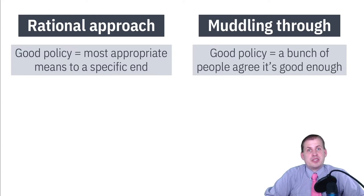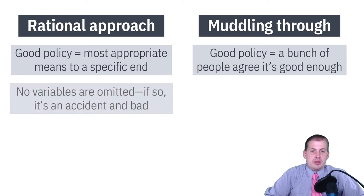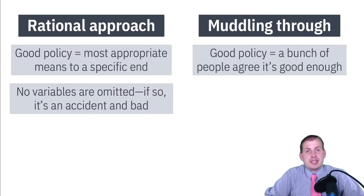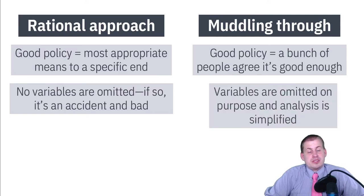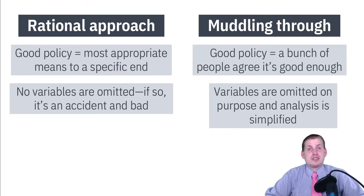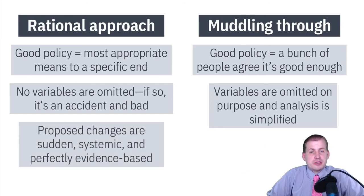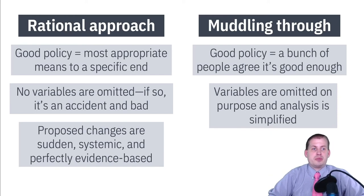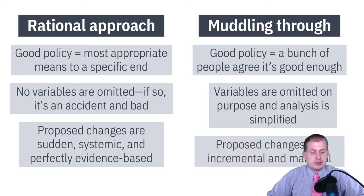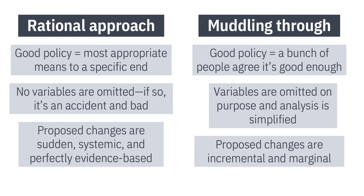In the article, Lindblom compares the two approaches. In the rational approach, good policy is the most appropriate means to a specific end — well-researched and the best solution. In the muddling through world, good policy means a bunch of people agree it's good enough to work. In the rational approach there are no omitted variables. In the muddling through world, you purposely oversimplify — like clothes versus all other goods, or waffles and calzones — to understand broader principles. With the rational approach, proposed changes are immediate, systemic, and evidence-based.